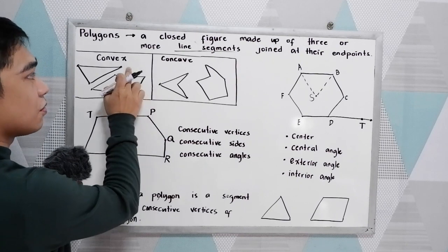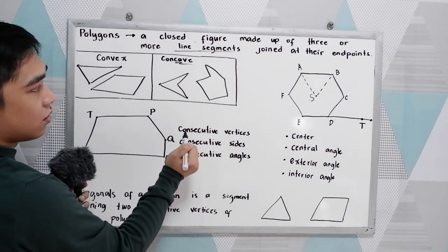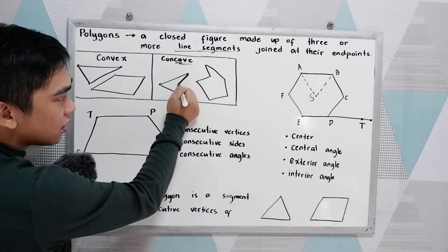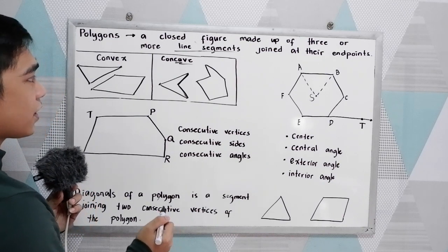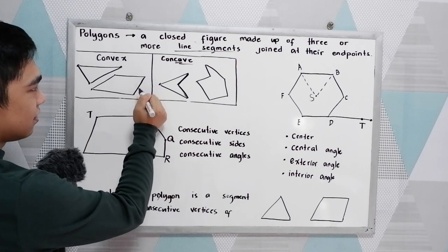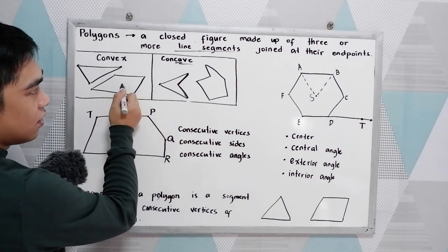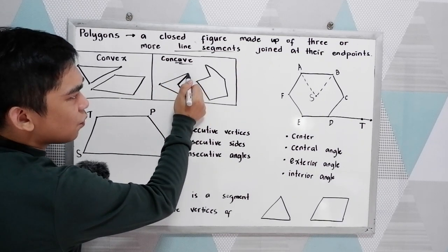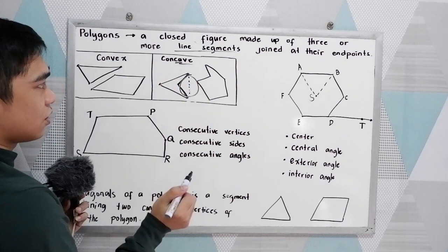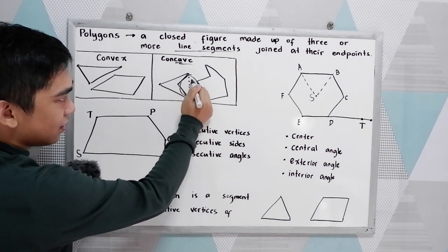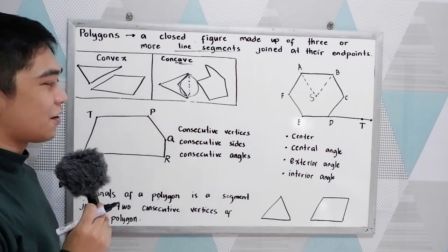Examining the two kinds of polygons — convex and concave — notice that from the root word itself, 'cave.' Looking at the exterior angle of our polygon, check the difference between the two. A convex polygon, if you connect any of the end points, will not create an angle outside or exterior angle, comparing to a concave polygon. If we connect two vertices on a concave polygon, we have an angle formed outside. That is the difference between convex and concave.